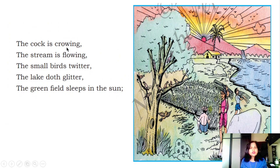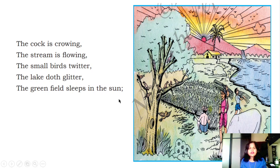The cock is crowing. The stream is flowing. The small birds twitter. The lake doth glitter — 'doth' means 'does', so the lake is glittering. The green field sleeps in the sun — meaning the green field is sleeping in the sun means it is winter, no leaves are there, all the green has become brown now.